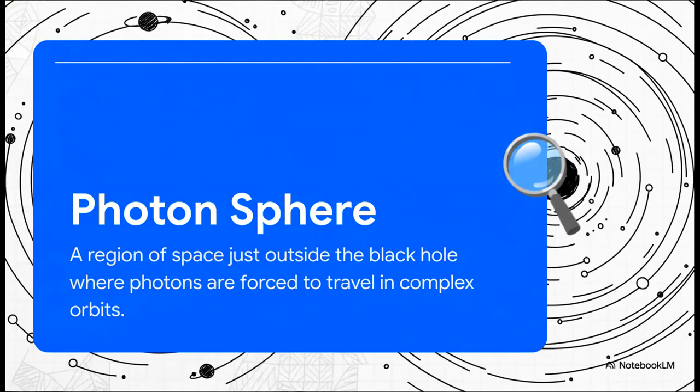Now, before you hit that point of no return, there's this fascinating zone called the photon sphere. Here, gravity is so strong that photons, particles of light, can get trapped, circling the black hole like little satellites.